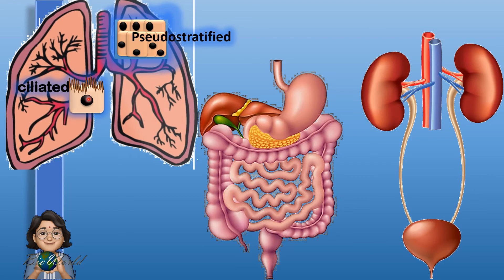At the ending of the respiratory system we have the alveolus. In the alveolus, you will find squamous epithelial tissue. Squamous epithelial tissues increase the surface area, enabling more efficient gaseous exchange.